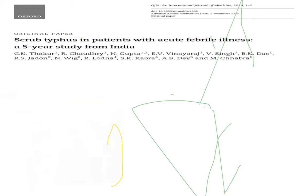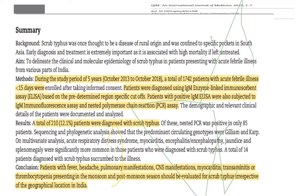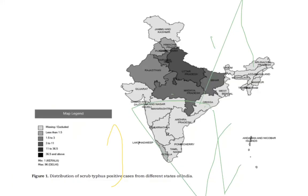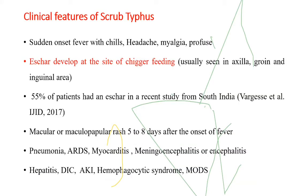A five-year study from AIIMS on scrub typhus in AFI patients screened 1742 patients, with 12% diagnosed with scrub typhus using nested PCR, ELISA-based method, and IFA method. Clinical features of scrub typhus include acute sudden onset fever, headache, myalgia, and eschar developing at the site of vector bite — reported in 55% of patients in a recent CMC study. Maculopapular rash can also be seen. Complications include pneumonia, ARDS, myocarditis, meningoencephalitis, ultimately leading to multi-organ dysfunction or HLH syndrome.